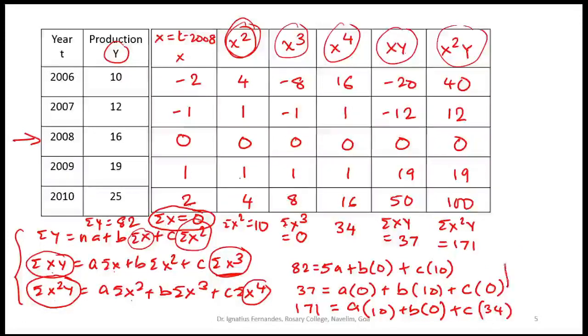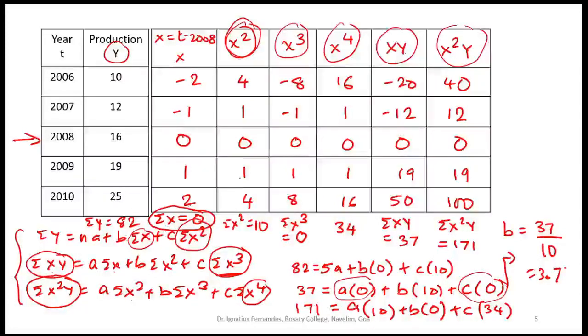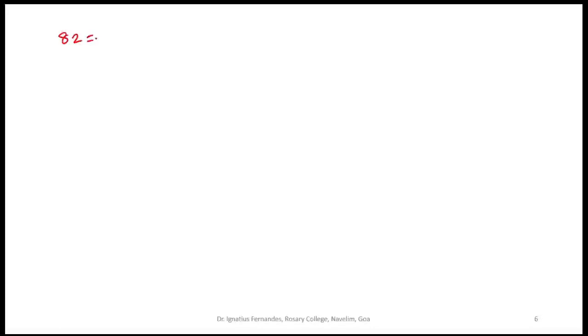Looking at the second equation, since both the a-term and c-term are zero, we get b directly: b = 37 / 10 = 3.7. Now we only need to find a and c by solving the two remaining equations: 82 = 5a + 10c and 171 = 10a + 34c.